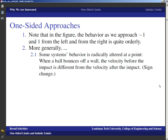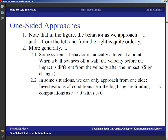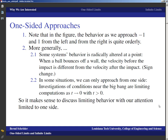For example, when a ball bounces off a wall, the velocity before the impact is different from the velocity after the impact in the sense that the sign changes — the ball flies toward the wall, hits, and then goes back. This can be modeled with plus five meters per second going in and minus five meters per second coming out. Also, physicists are interested in conditions near the Big Bang — you'd take a limit as time goes to zero, but time will always be greater than zero, so we can only approach from one side.